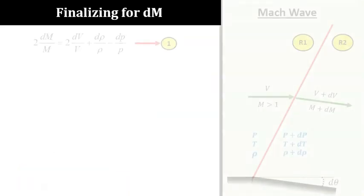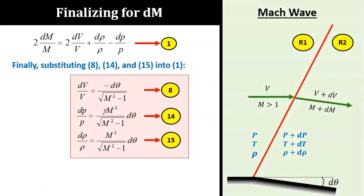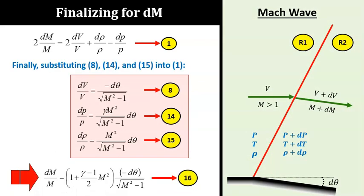So, putting all the pieces together into equation 1 that we started off earlier, we will get equation 16. We do this by using equations 8, 14, and 15 into equation 1. Our final equation here, equation 16, essentially relates the unknown parameter dM with the known parameter dθ, as a function of the Mach number of the incoming flow. This equation is the essence of the Prandtl-Meyer function, which we will finalize in our next lecture video.